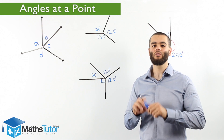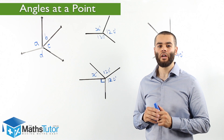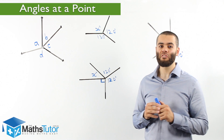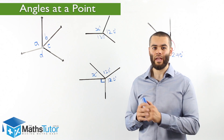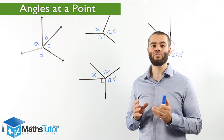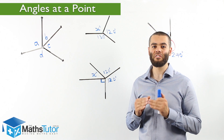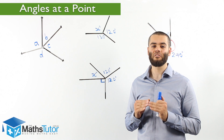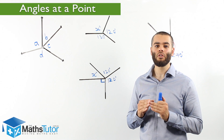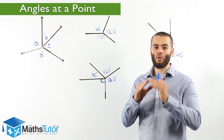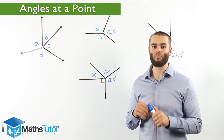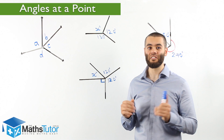Hey guys, today I'm going to show you how to solve angles that are missing using angles at a point. Angles at a point, as the name suggests, are angles that meet at a certain point. Their vertices all meet at a certain point and they make a full circle or a full turn when we add the angles together, and they add up to 360 degrees.